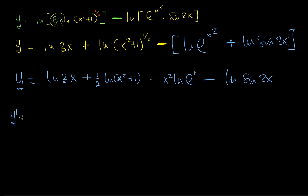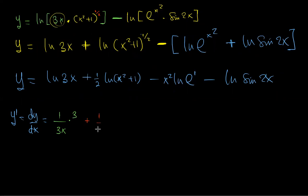Now we can start differentiating. We want y′, which is dy/dx, the first derivative. Differentiating ln(3x): that gives 1 over the whole function, then we differentiate 3x which is 3, so that's 3/(3x). Then we have plus half: ln wants us to have 1 over the function, so we differentiate (x² + 1) which is 2x.